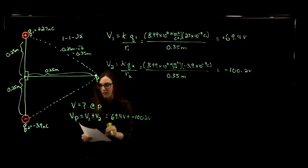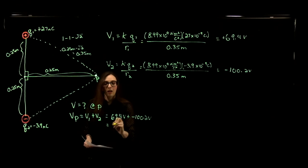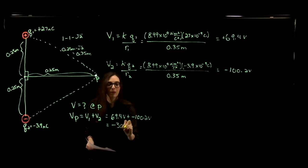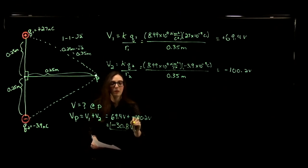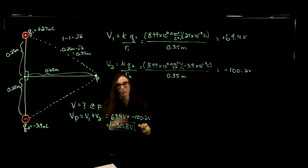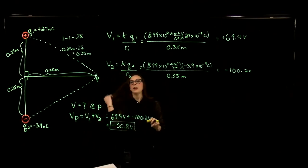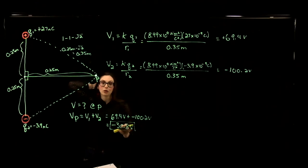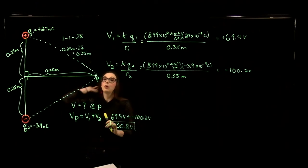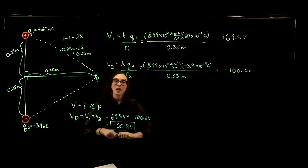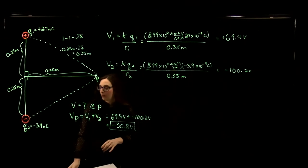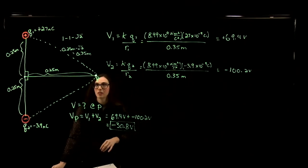So our total electric potential at point P is 69.4 volts plus negative 100.2 volts, giving us an electric potential of minus 30.8 volts. This problem is very similar to one of your workbook problems. Now, instead of asking for the electric potential at point P, let's think about the electric field at point P due to these two charges.